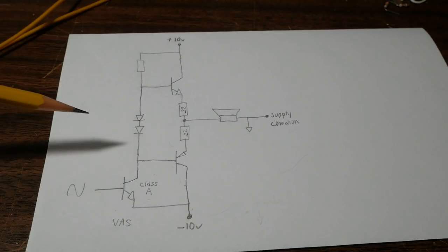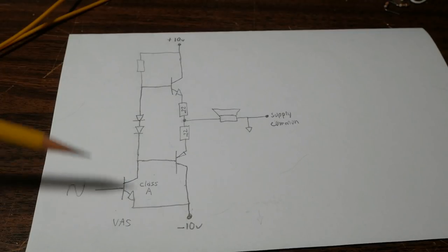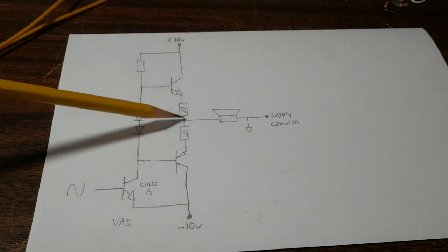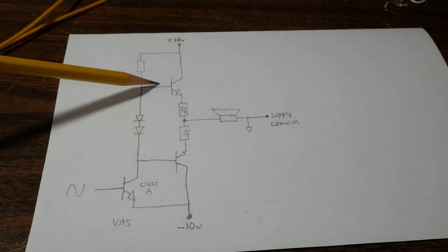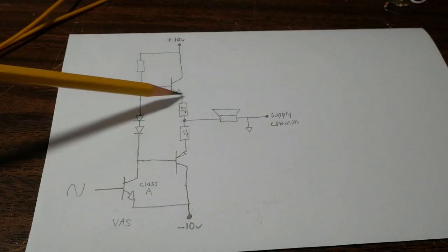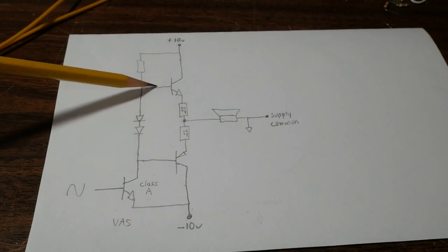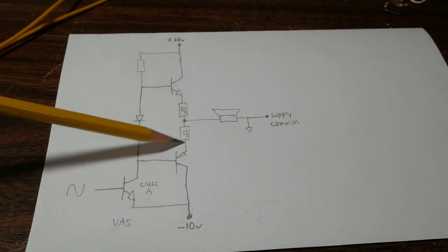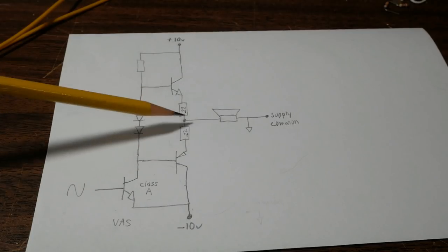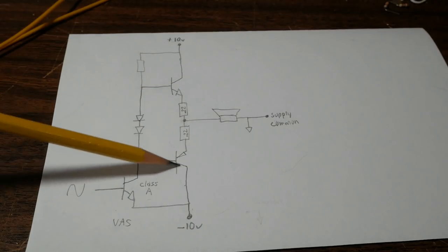Now let's look at this amplifier in a couple of scenarios. Let's say that it's turned on and there's no signal. So the output is going to be at zero. And if you remember, transistors have the base-to-emitter junction and that voltage drop is going to be around 650 millivolts or so on both transistors.